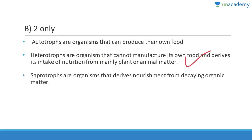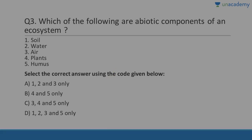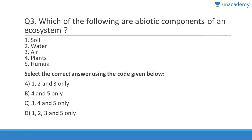The answer is B, option 2 only. Autotrophs are organisms that can produce their own food, heterotrophs cannot manufacture their own food and derive nutrition from plant or animal matter, and saprotrophs are organisms that derive nutrition from decaying organic matter. Question 3: Which of the following are abiotic components? Abiotic means non-living — soil is non-living, water is non-living, air is non-living, humus is non-living, but plants are living.